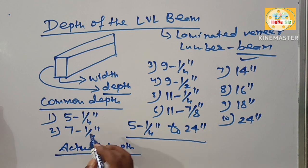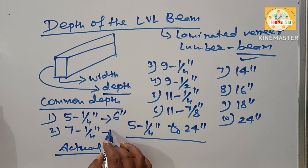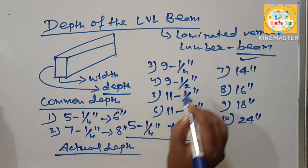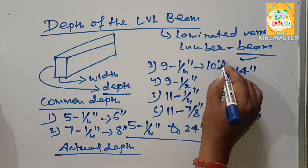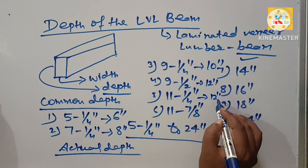The nominal depths are 6 inches, 8 inches, 10 inches, 10 inches, 12 inches, and 12 inches. These are the common depths of LVL beams used in building construction.